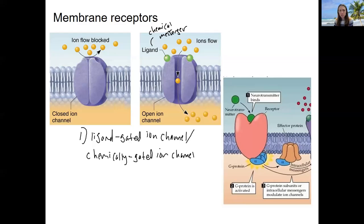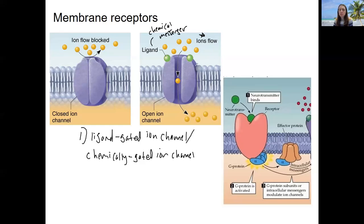There are two other types of ion channels, as well as leak channels that are just always open. This specific type is opened via the binding of a chemical messenger, which changes the conformation of the protein slightly, causing it to open so ions can flow down their electrochemical gradients — down their concentration gradients, with electrical charge also being important. There are channels specific to potassium, ones specific to sodium, and ones that are a little less specific.